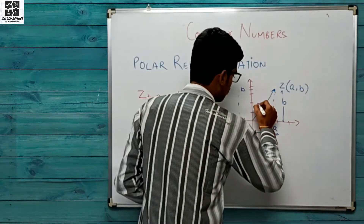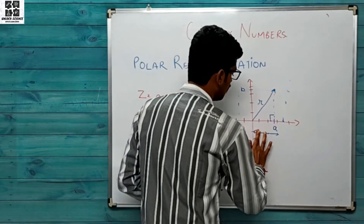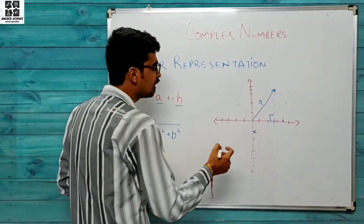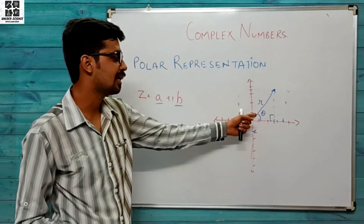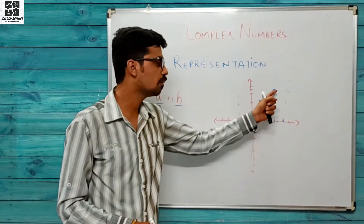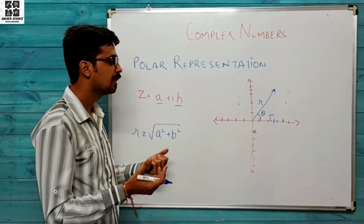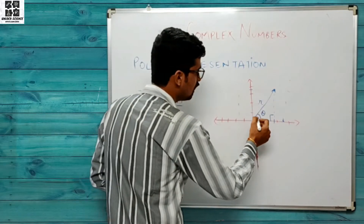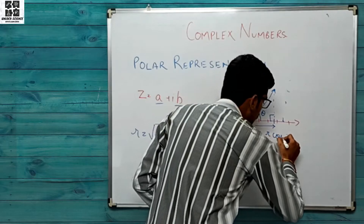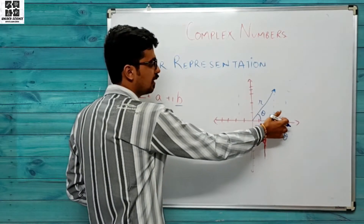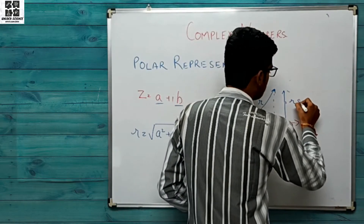Ab maine aapse kaha ki yeh complex number r se represent kar diya. Ek nayi cheez coin ki gayi — theta — that is the inclination of this line, or the line joining the origin to the point of the complex number, woh inclination x-axis se kitni hai. Basic resolution of components mein jis taraf theta hota hai ya x-axis pe hum r times of cos theta upload karte hain.